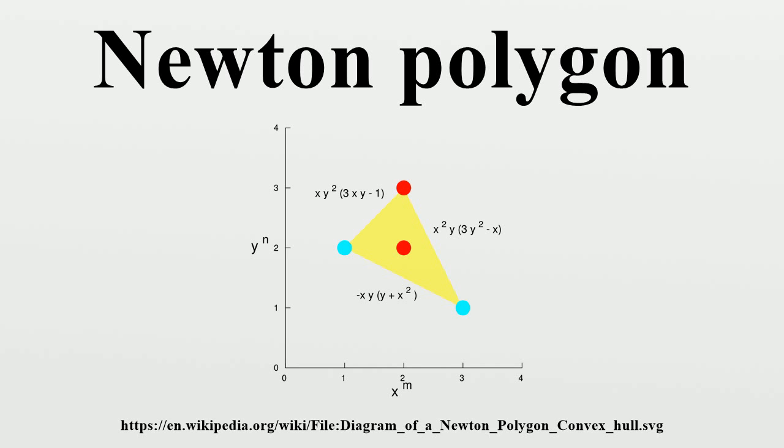The vertices of the Newton polygon are exactly those points. For a neat diagram of this, see Chapter 6.3 of Local Fields by J.W.S. Cassels, LMS Student Texts 3, CUP 1986, page 99 of the 1986 paperback edition.